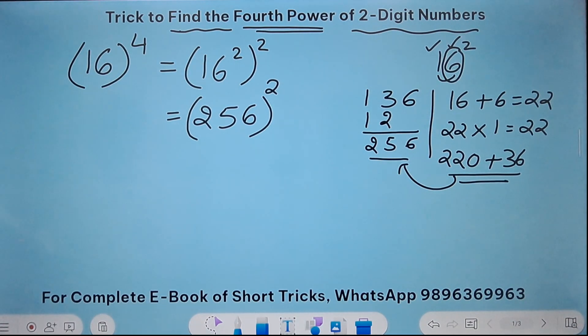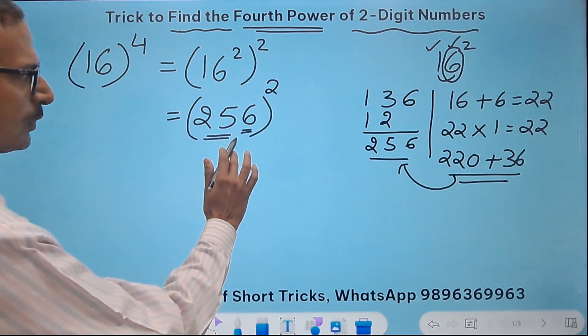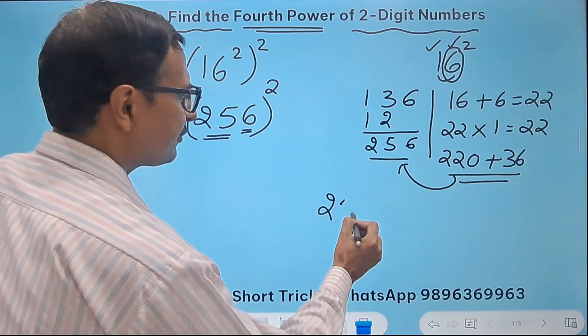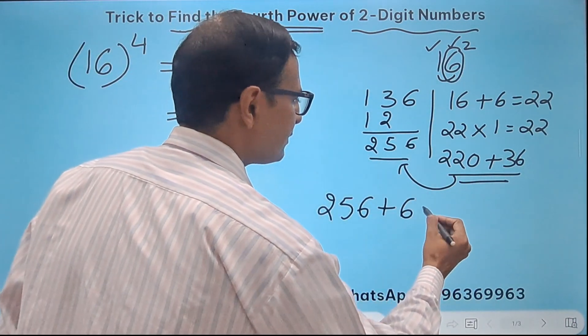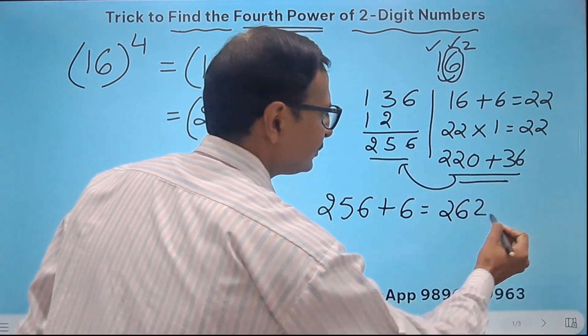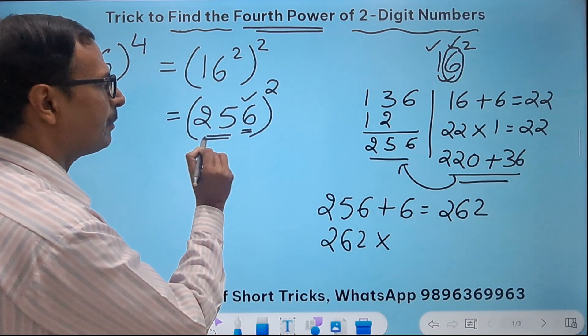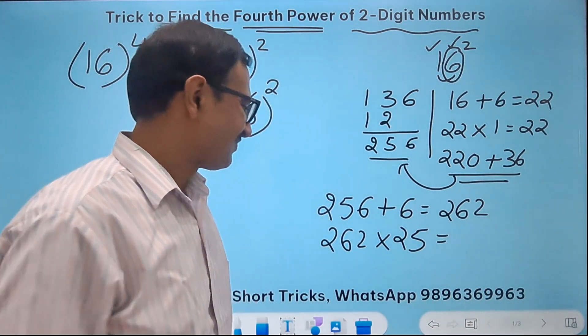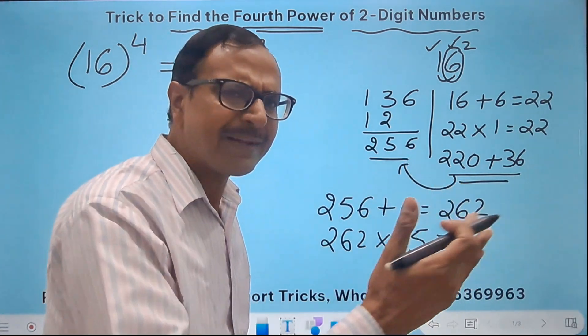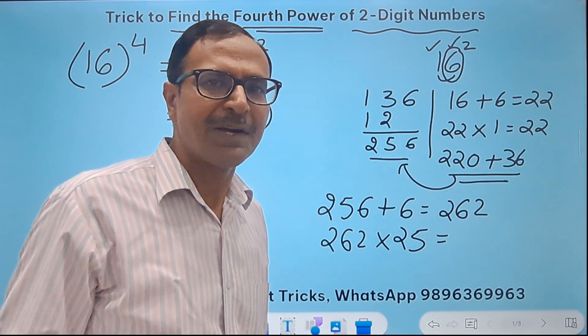It's easier for me to take 25 and then take 6. So 256 plus the unit digit 6 gives me 262 and then 262 times this doublet 25. Now how do you multiply a number by 25? Multiply by 100 and then take half of half. 100 upon 4 that is 25.